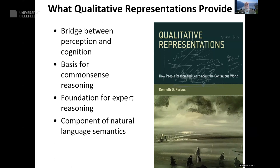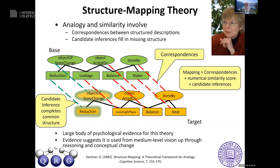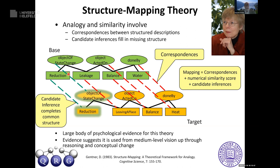For analogy, we use Dedre Gentner's structure mapping theory. Analogy involves correspondences between components of structured representations. Here are two descriptions — one of water leaking from a bucket and one of heat leaving a house — automatically produced by a natural language system understanding an analogy. There are entities and relationships connecting them, and analogy makes correspondences: what goes with what. Then it fills in missing structure — if I reduce leakage in the bucket I have less water leaking out, and so it is with heat. That's the candidate inference you're projecting.